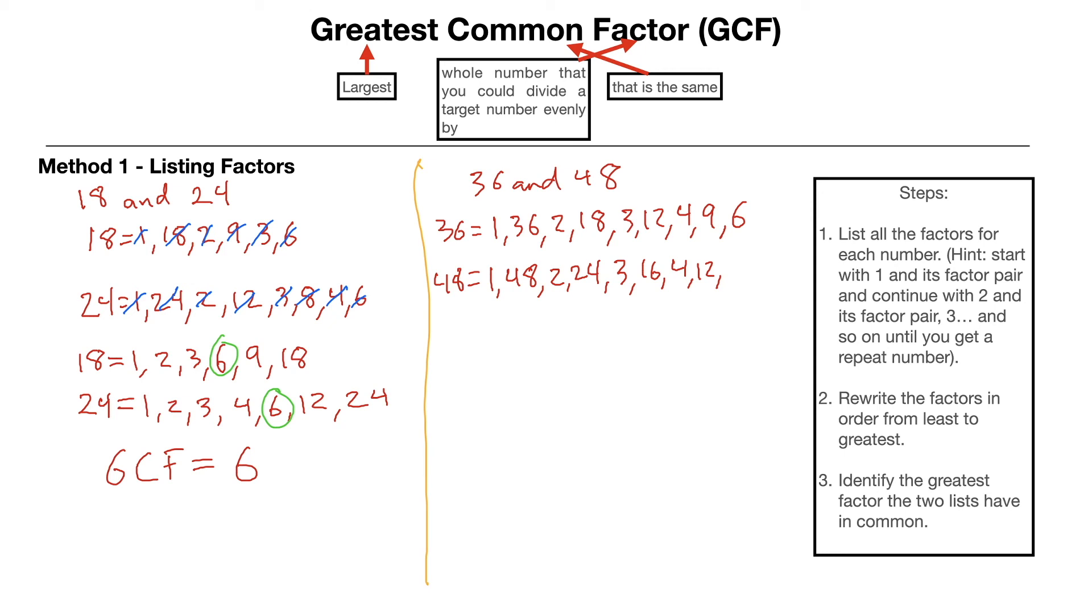5, we can't divide by. 6, we can. We can get 6 and 8. 7, we can't divide by. And 8 is already in our list. So again, by going in that order, we've covered every single factor pair.